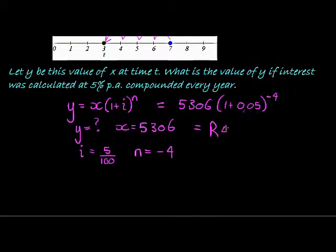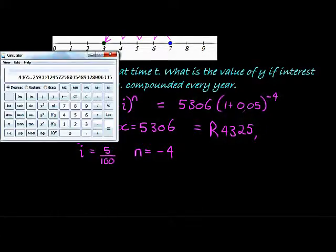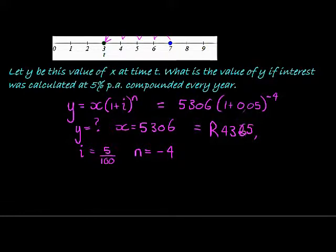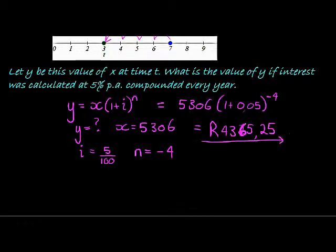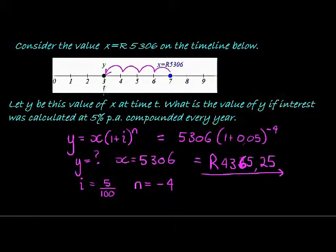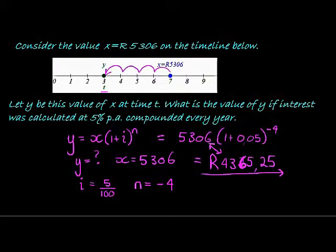Working that out: 5306 × (1.05)^(−4) gives R4,365.25. That is the value at time T. Notice how the past value is less than the future value, which makes sense because the future value included more interest.